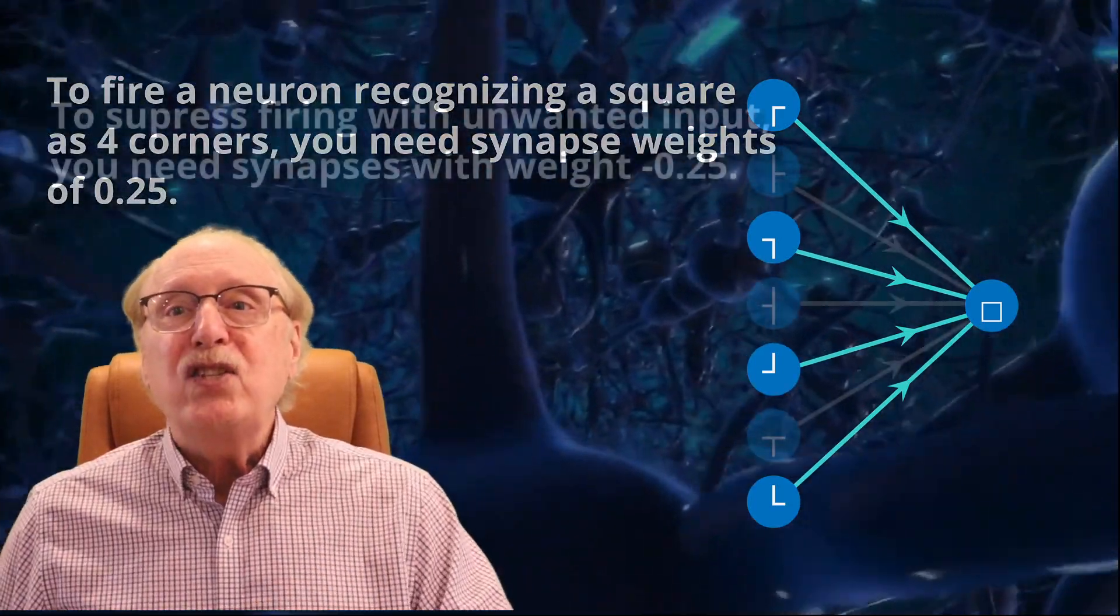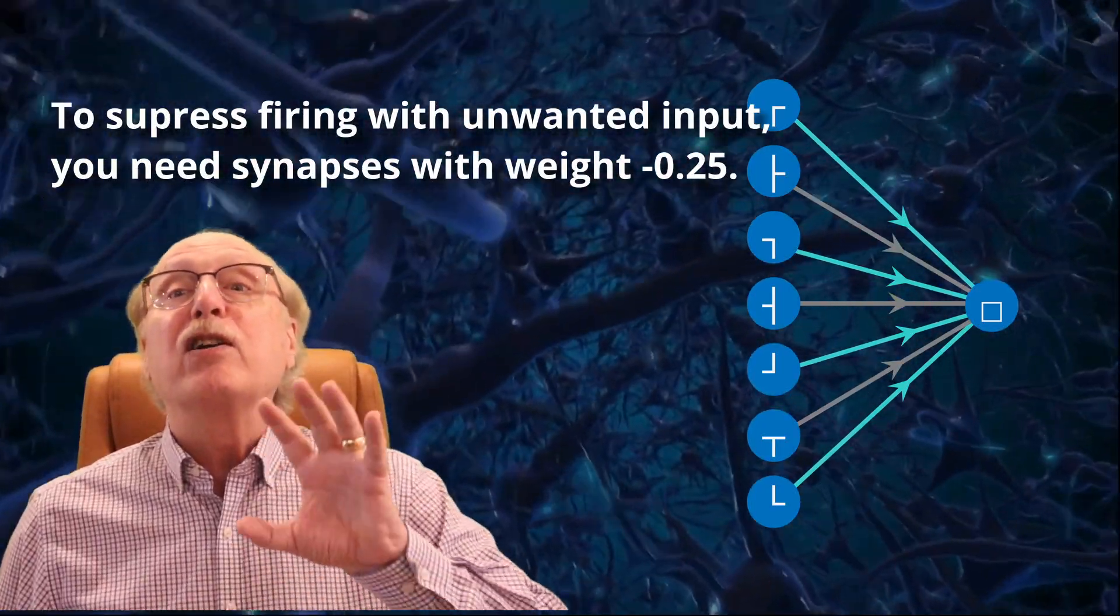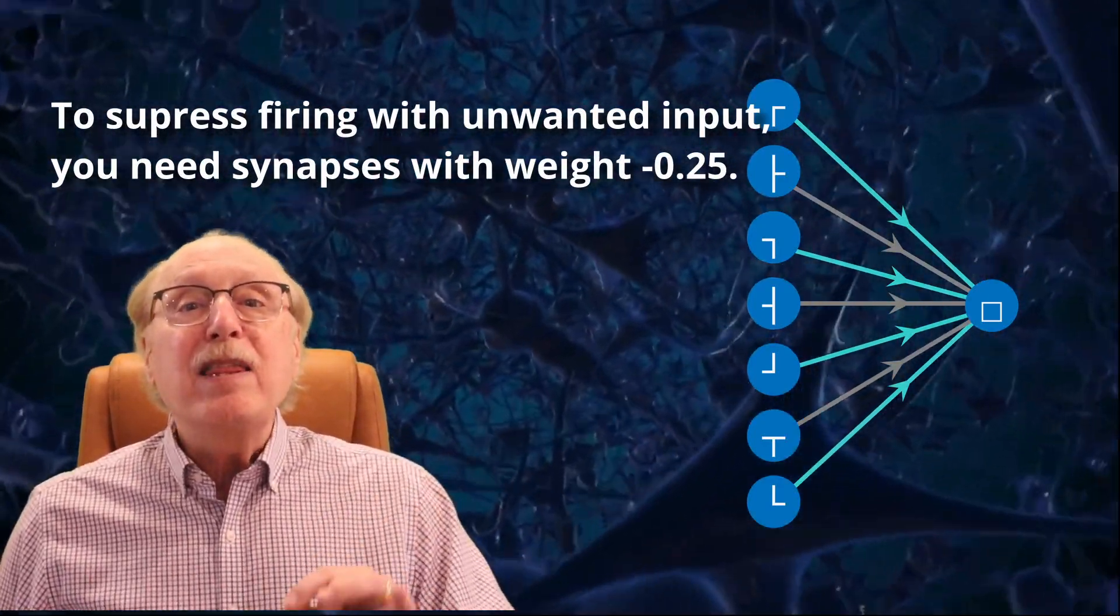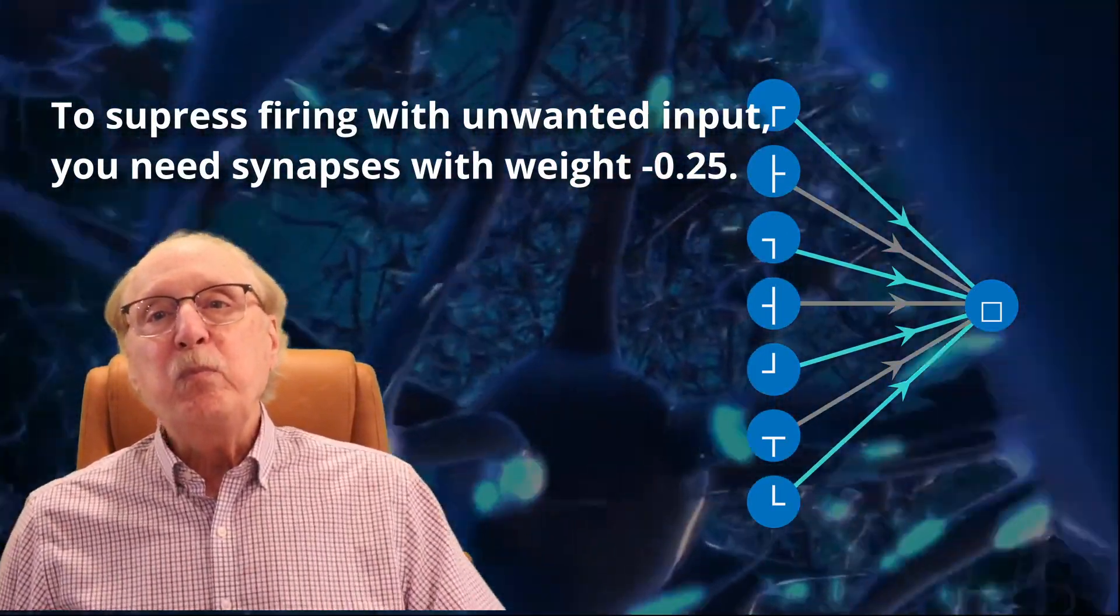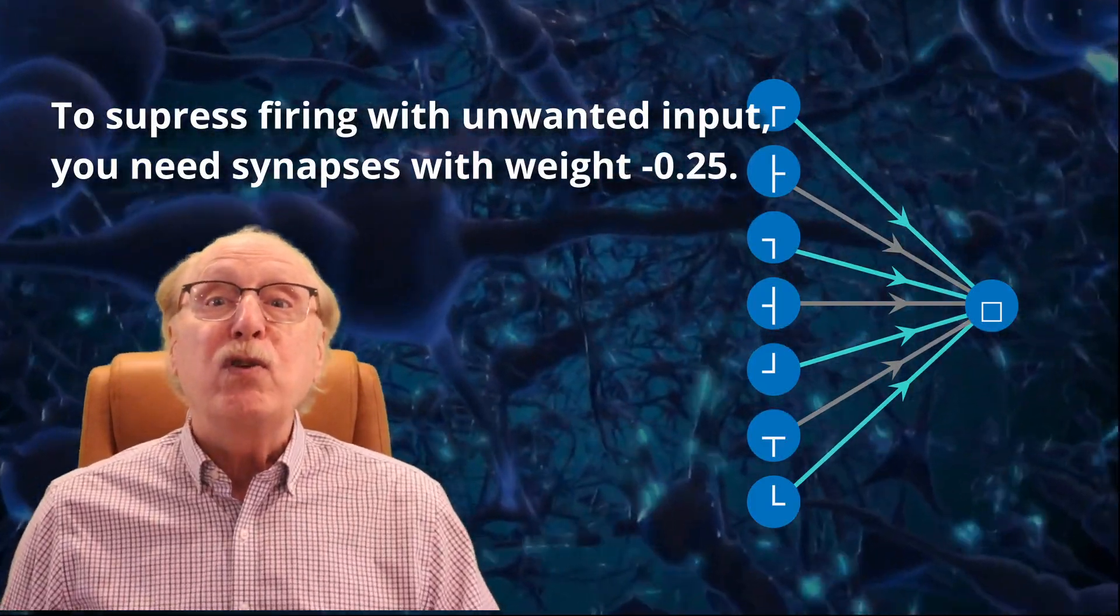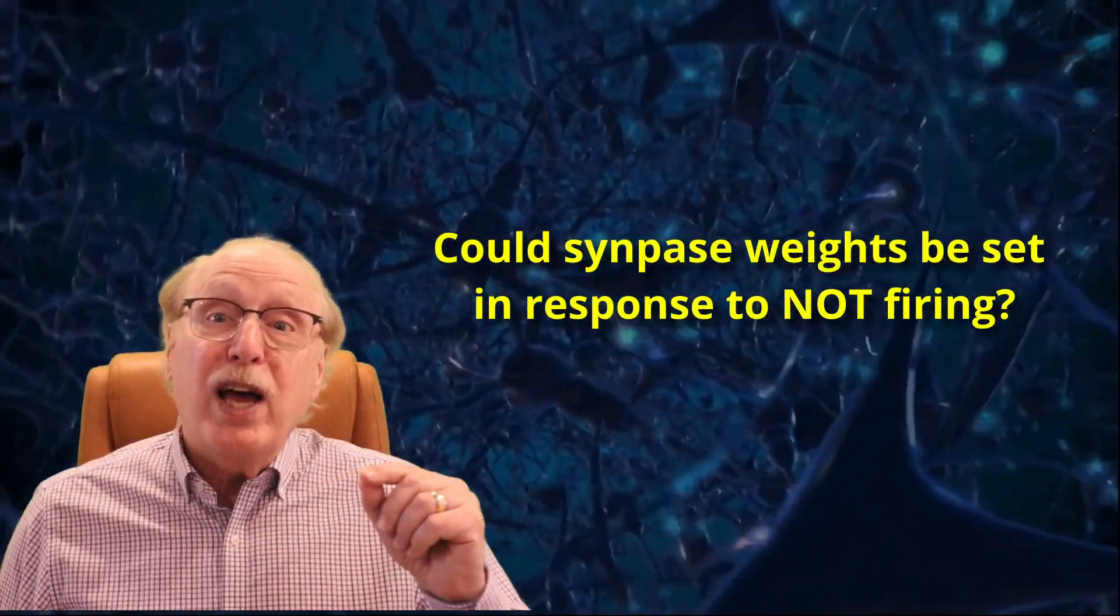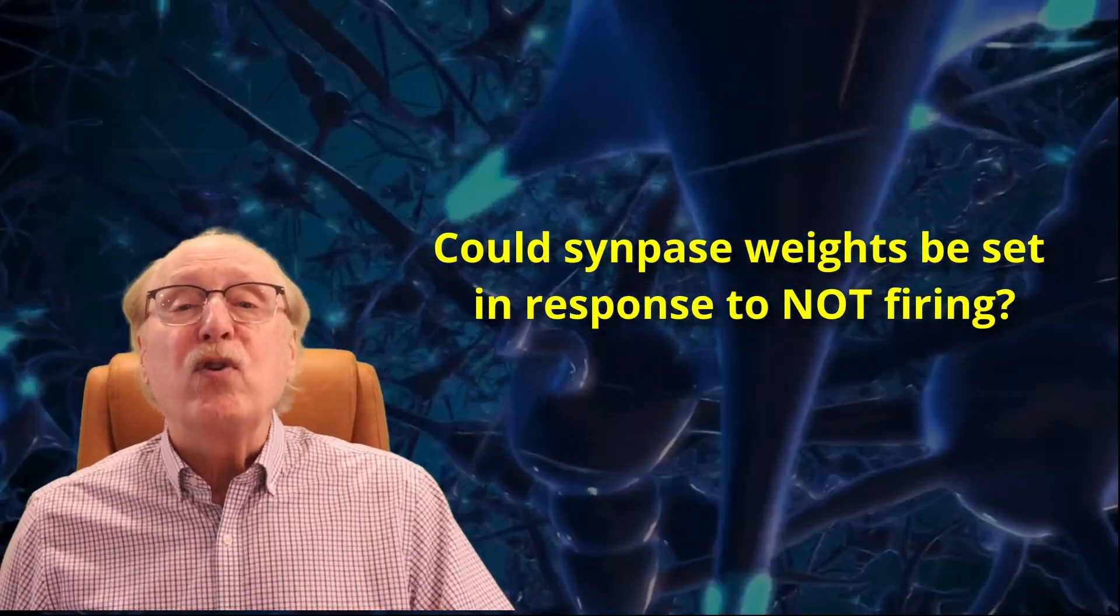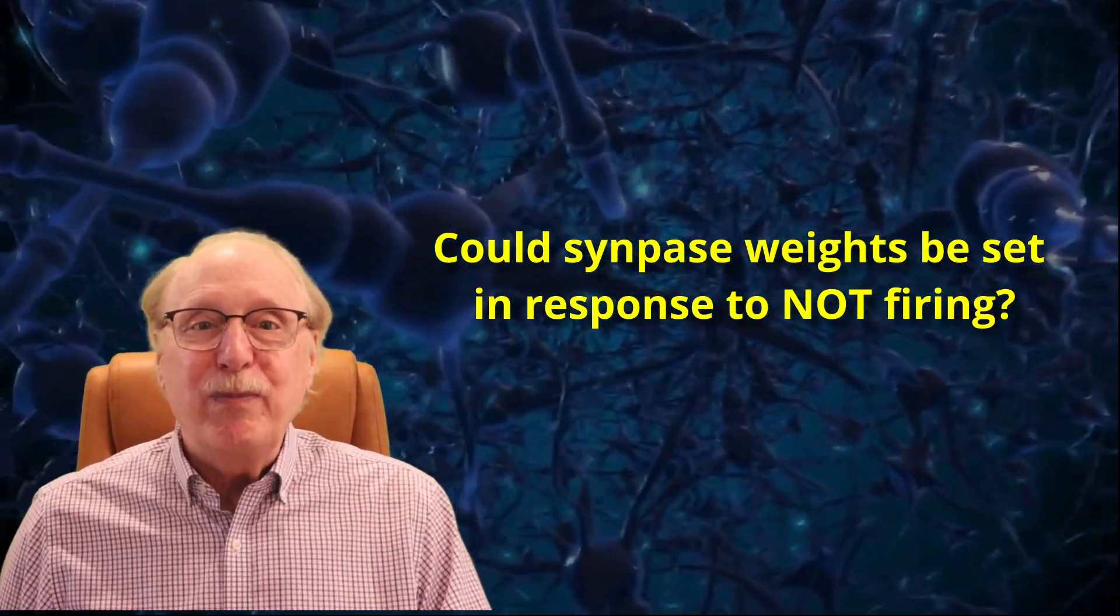But if we extend this scenario to say that we want to recognize a specific pattern of four firing inputs out of a set of more inputs, and the other should not be firing, we'd like the other inputs to gravitate toward an inhibitory weight of minus 0.25. That way, if our four desired neurons fire but one extraneous input also fires, our target will be suppressed from firing immediately. Hebbian learning does not address this scenario because it depends on setting a synapse weight based on a neuron's not firing. We'll have to speculate on an alternative mechanism in the future.